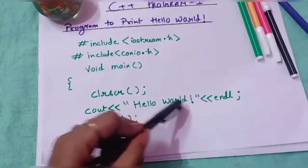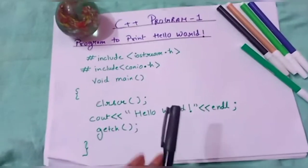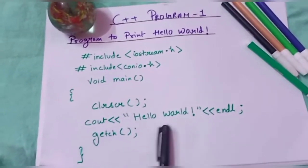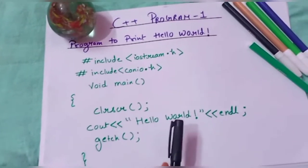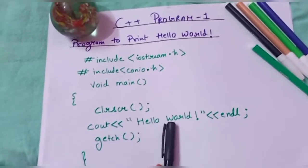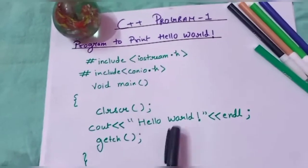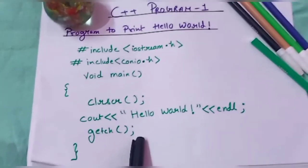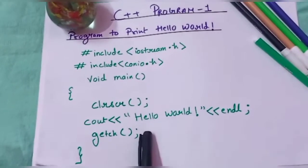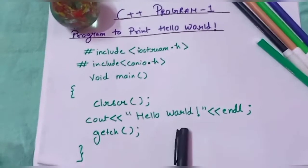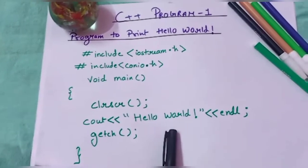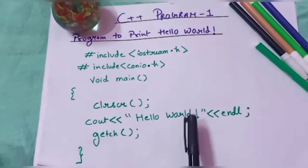Before getting the output, we need to compile the program. The shortcut key is Alt+F9 — press them together to begin compilation. If there are errors, the compiler will guide us and mention the line numbers. Once the program is error-free, success will be displayed. Then press Ctrl+F9 to run the program, and the output screen will display Hello World.